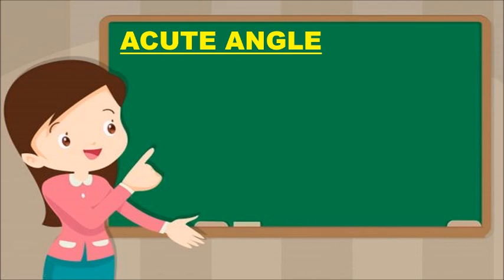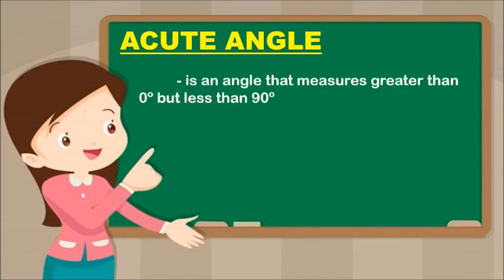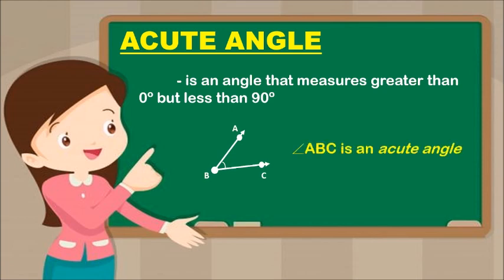Acute angle is an angle that measures greater than 0 degrees but less than 90 degrees. Angle ABC is an acute angle because it measures less than 90 degrees.